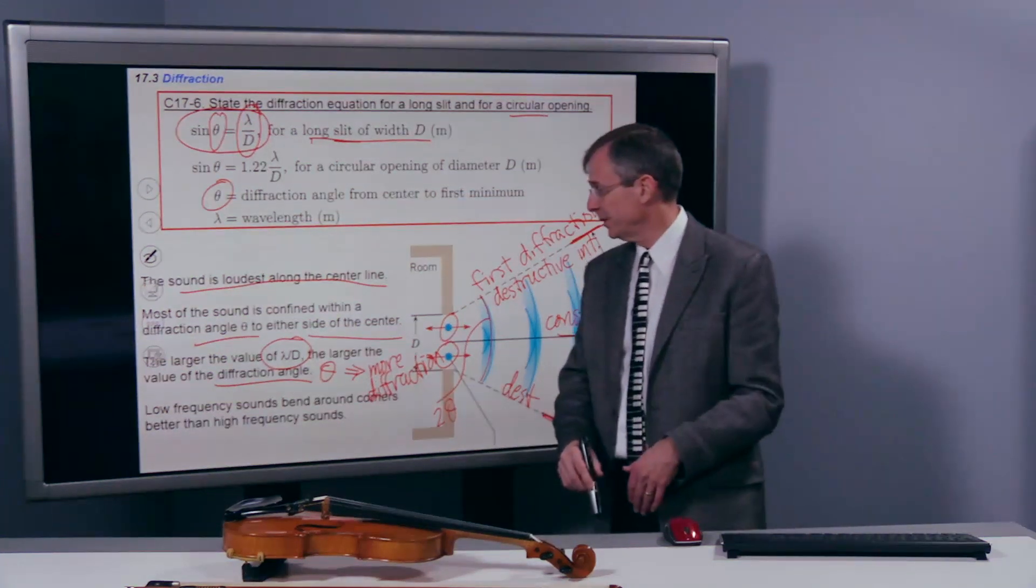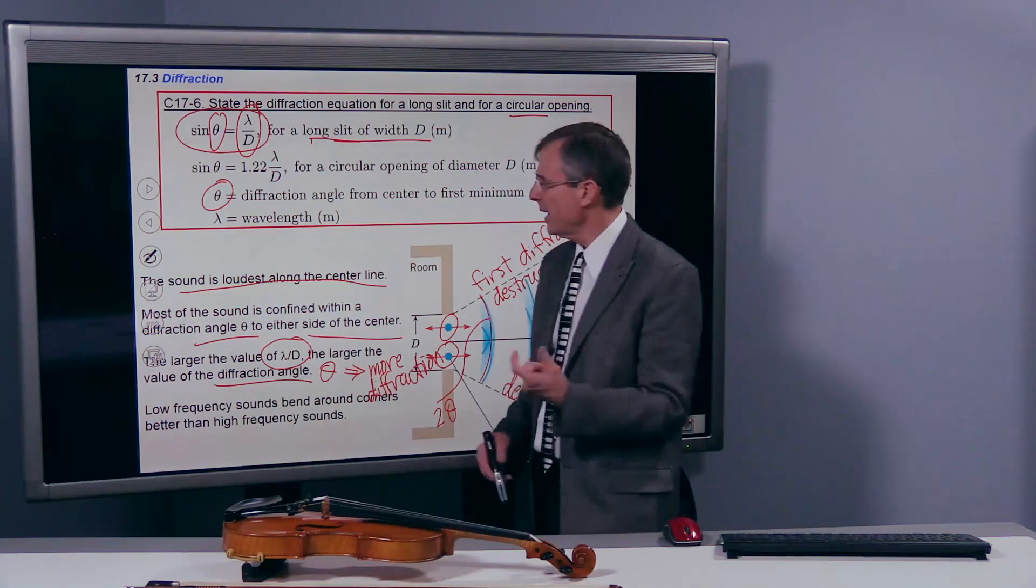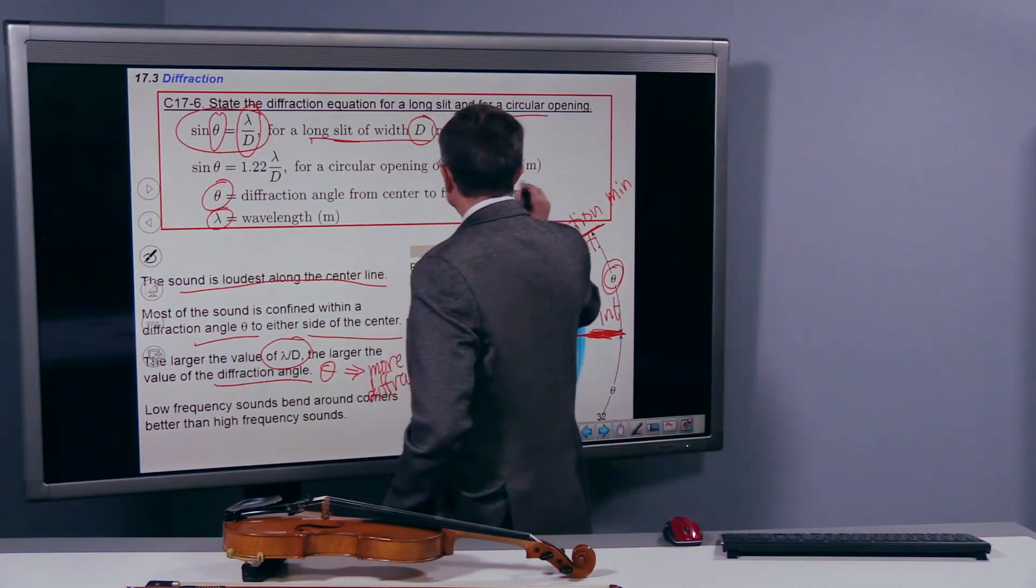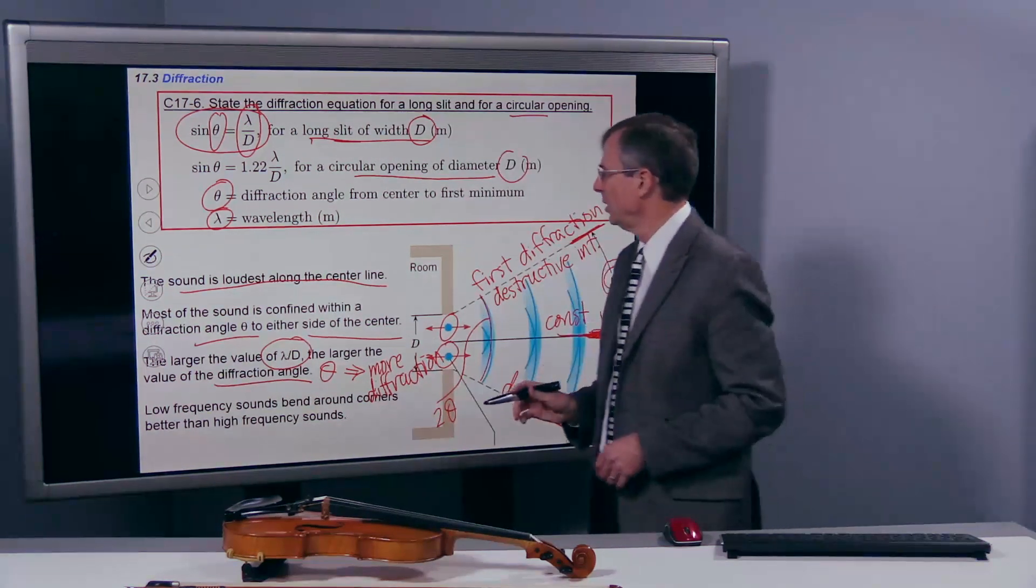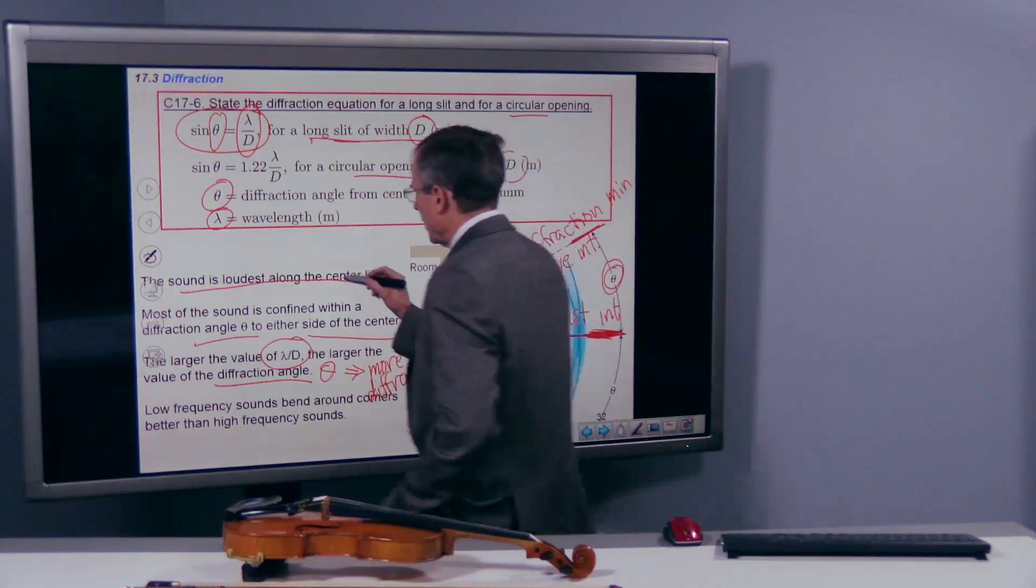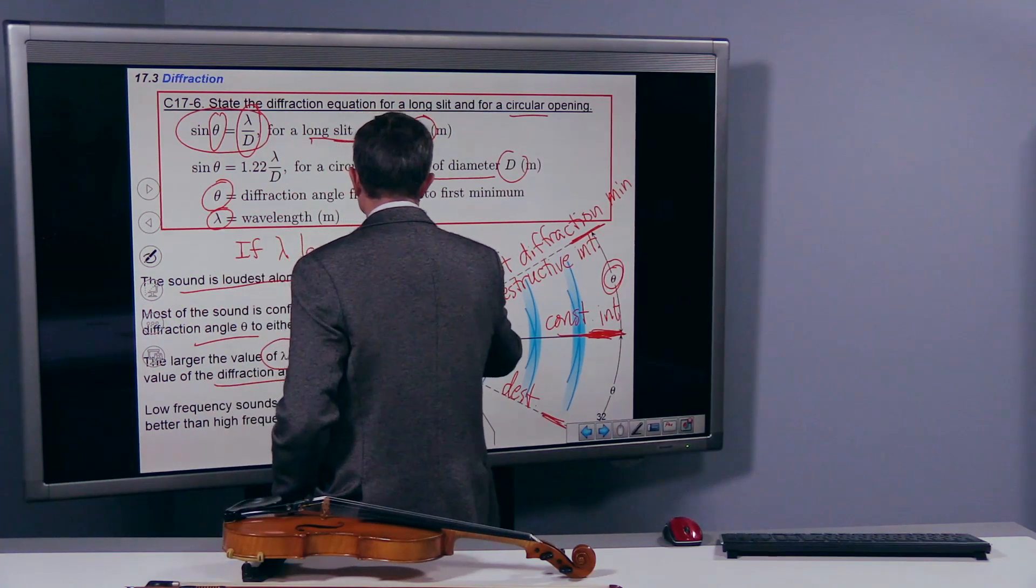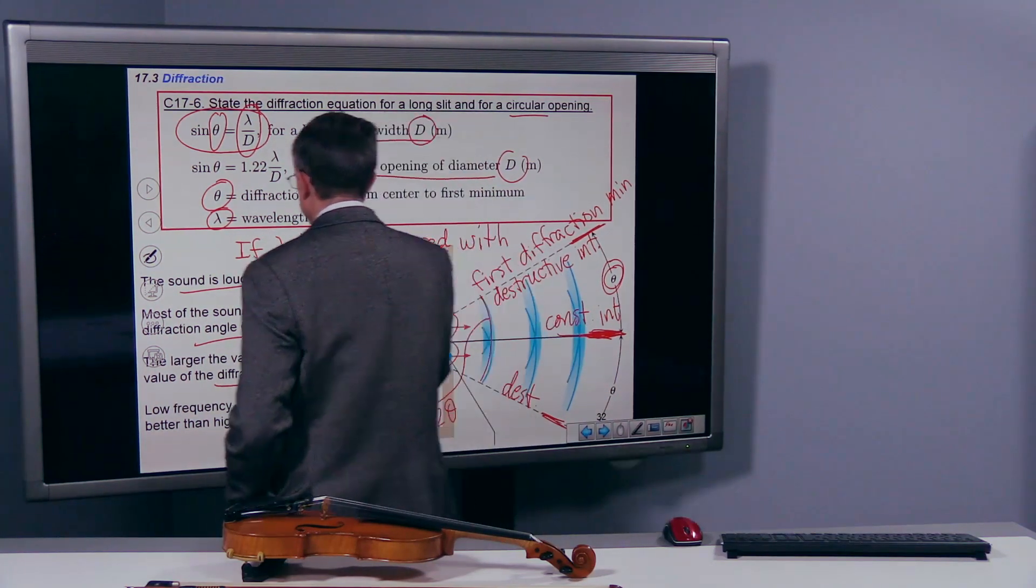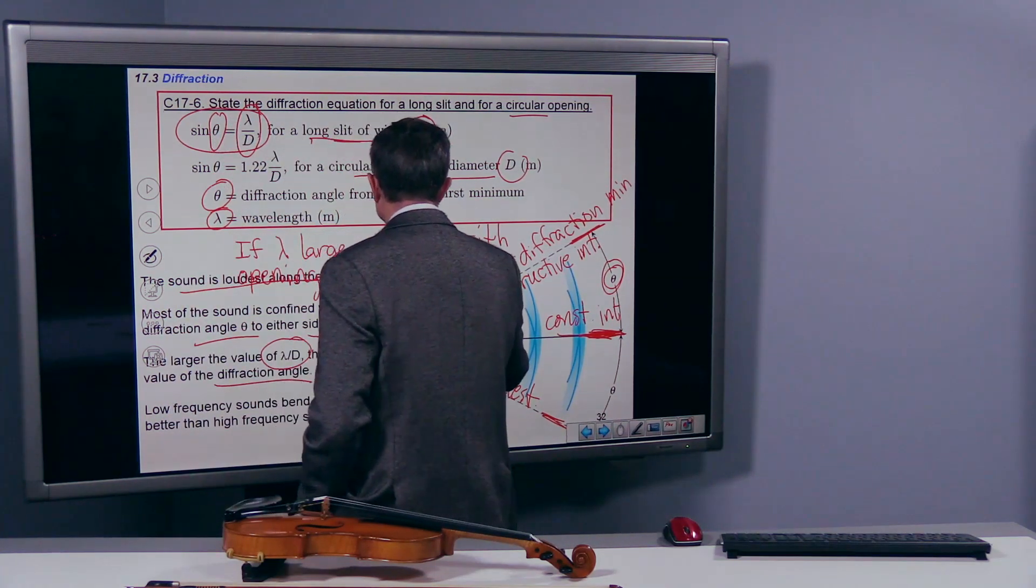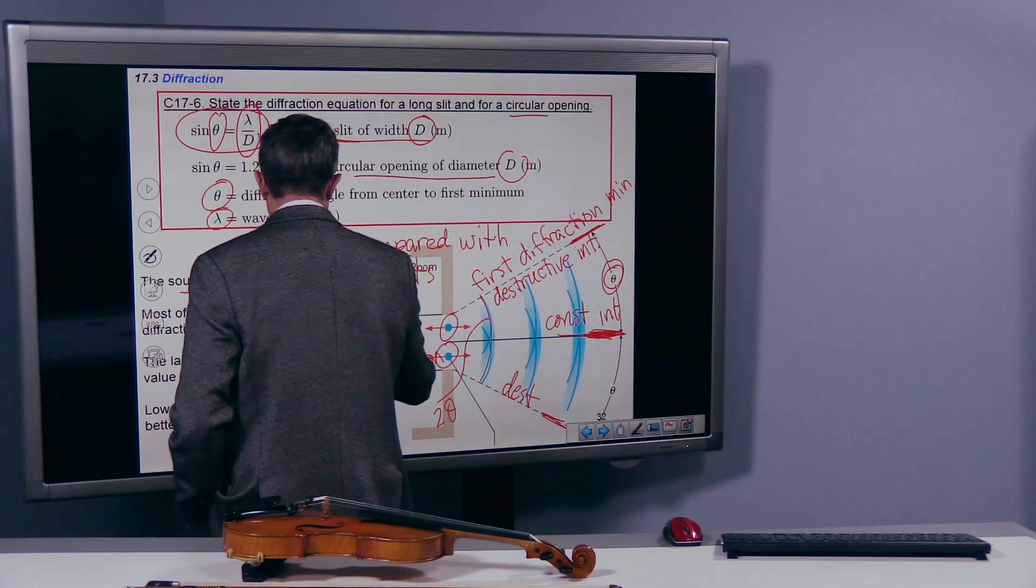Alternatively, the smaller the value of λ over d, the less diffraction you get. So as you can see, the ratio of the wavelength of the sound or the light or any kind of wave to the size of the opening, either the diameter of a circular opening or the width of a long slit, the ratio of that wavelength to the diameter is what's the key. If the wavelength is large compared with the opening size, then you get lots of diffraction, lots of bending.